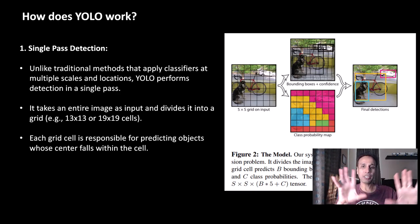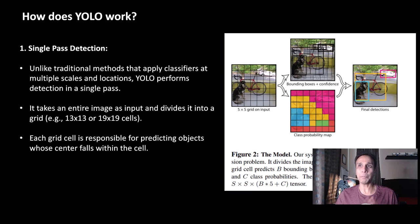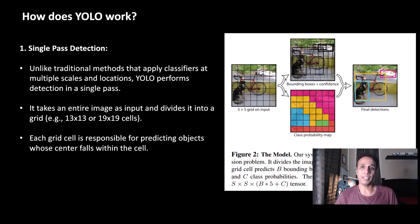The image gets broken down into a grid — 13x13 or 19x19, etc. — and each cell is responsible for predicting objects. If you look at the graphic on screen, you see the grid and multiple boxes. On top you have the class probability map, and there are two things going on: bounding boxes with confidence scores — the probability of some object lying within that bounding box — and on the bottom, class probabilities telling you what class is inside that box.